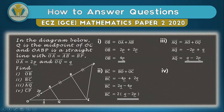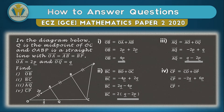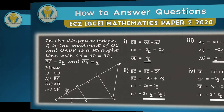Question four asks us to find CP. CP is the vector from C going to P: first from C to O, then from O to P. Vector CO is the opposite of OC, which was 2q, so it becomes minus 2q. OP is the addition of equal vectors 2p + 2p + 2p giving 6p. Arranging positives first and factorizing with 2 outside gives us the final answer 2(3p − q).